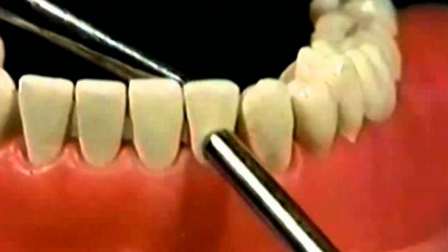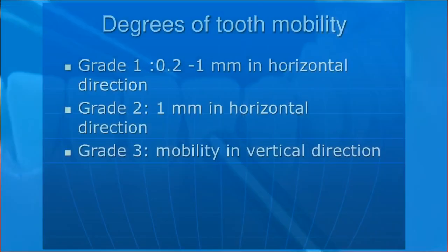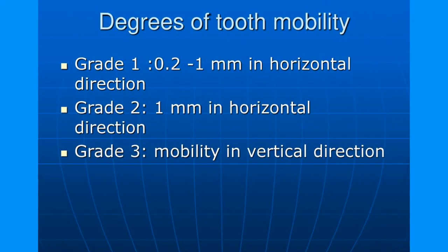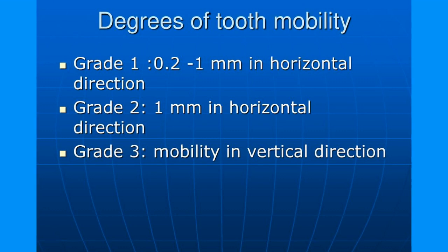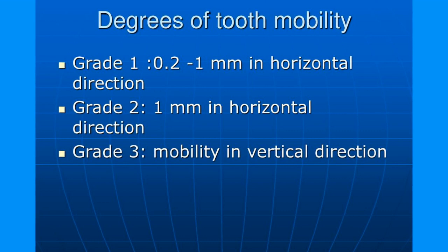Regarding the grades of tooth mobility: in Grade 1, it is less than one millimeter in the horizontal direction, either buccolingual or mesiodistal.